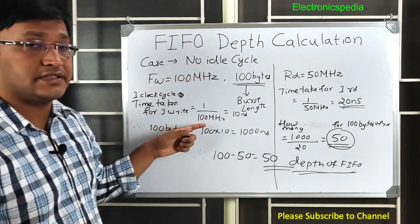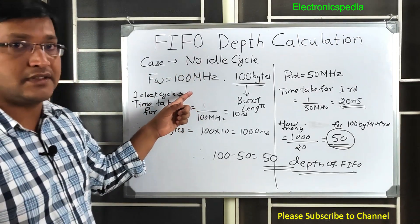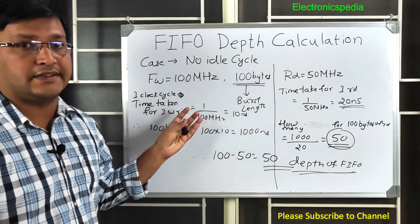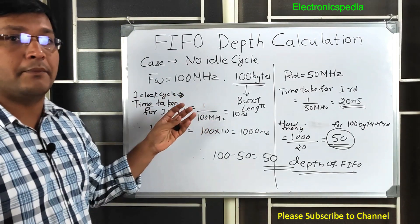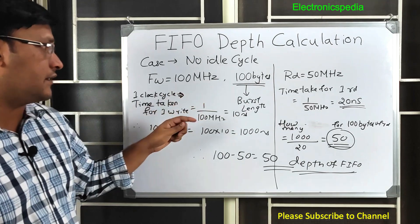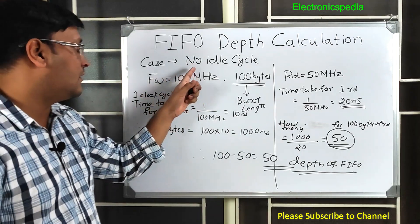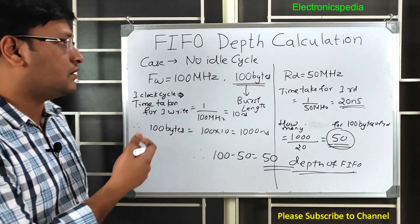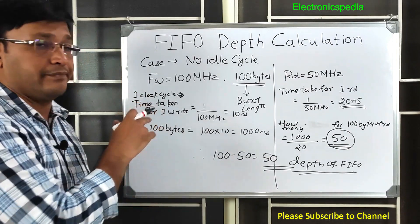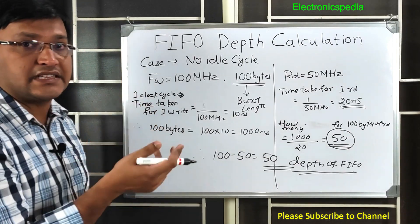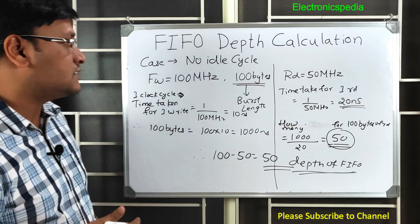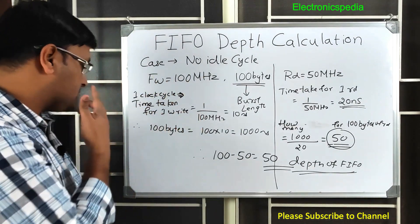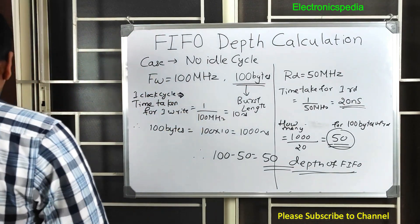In Case 1 we considered no idle cycles. An idle cycle means there is no bubble or wasted clock cycle between consecutive writes or reads. There can be cases where idle cycles exist between writes or reads, and I'll explain that in the next example.